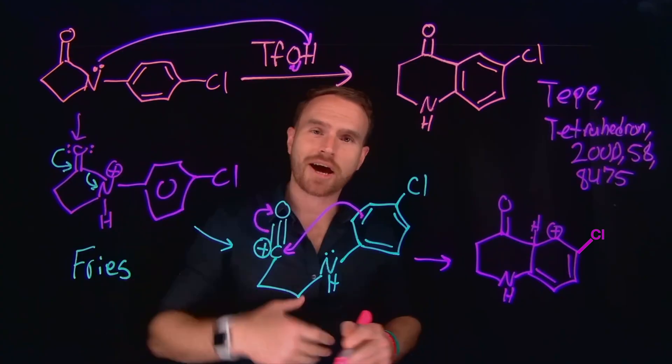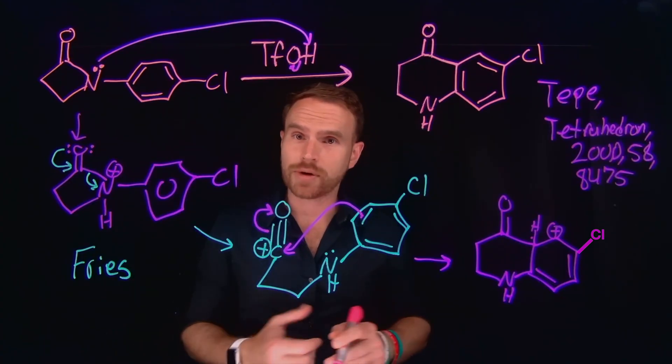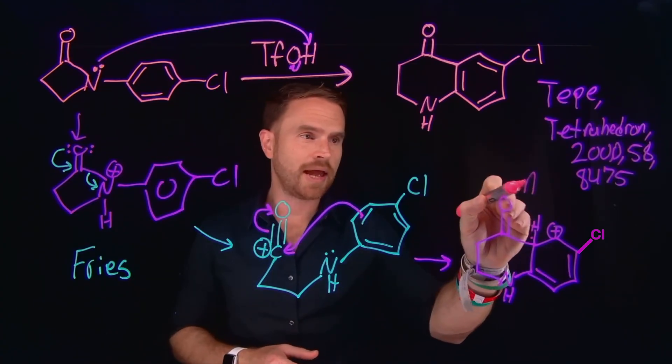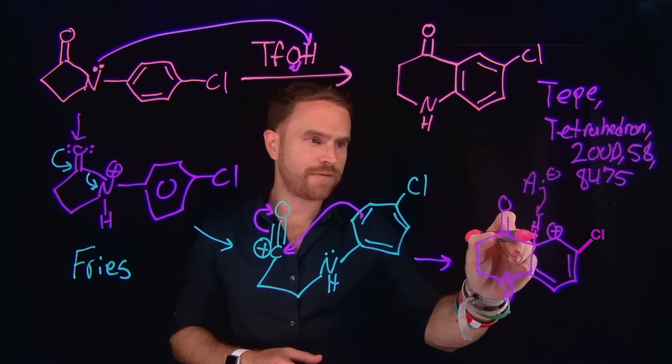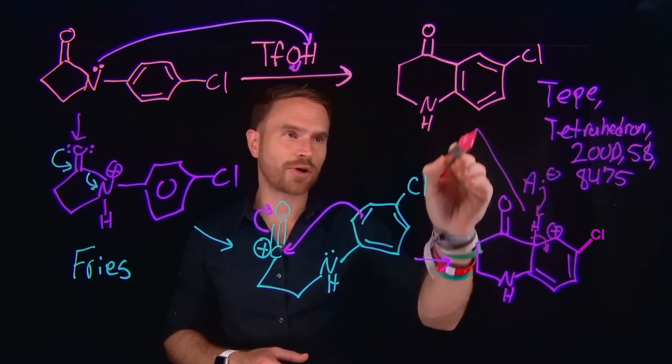Then all that needs to happen is the conjugate base that we generated following protonation in the first step can just come in and deprotonate this hydrogen to reform our aromatic ring and give us our final product.